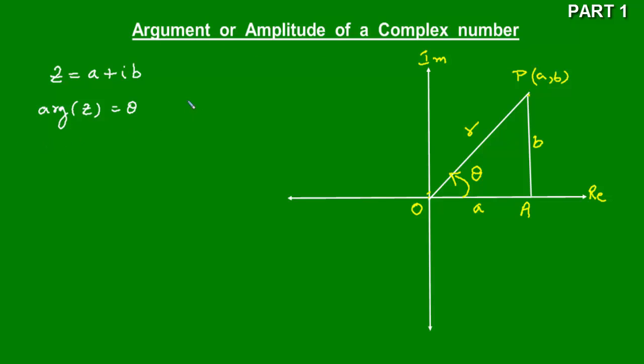The other name for argument is amplitude — amplitude or argument means the same thing, so we can also write amp(z). But there is a clause here — what is that 'but'?